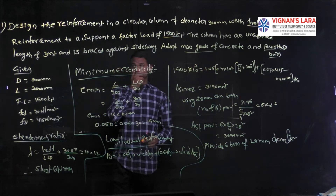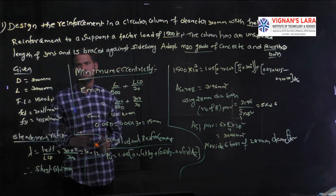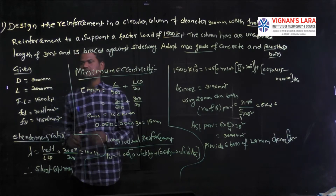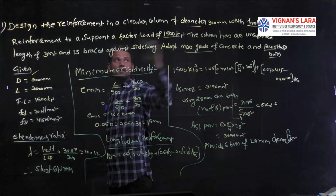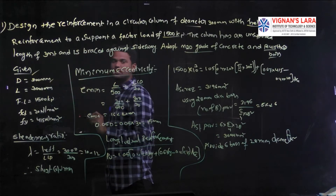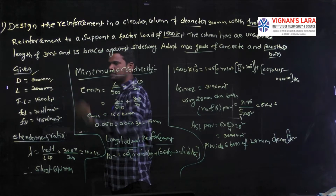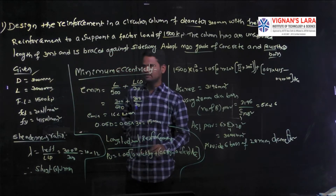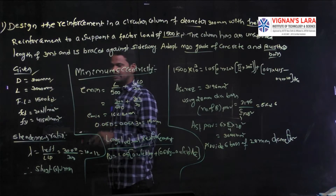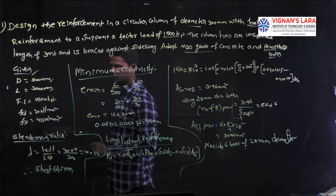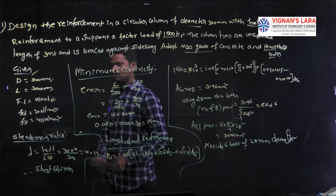The given parameters: diameter of the column D = 300 mm, unsupported length = 3000 mm, factored load Pu = 1500 kilonewtons, FCK = 20 N/mm² (characteristic compressive strength of concrete), and FY = 415 N/mm² (yield strength of steel reinforcement).